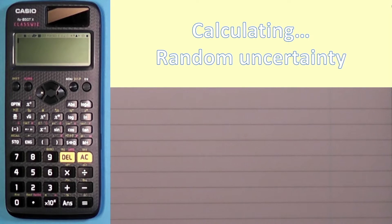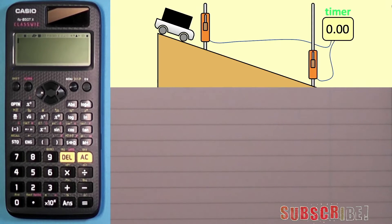So in this video we're going to be calculating random uncertainty. Now in order to explain that I'm going to show you this experiment. So in the experiment you're trying to find the time taken for a trolley to pass from one light gate to the next.